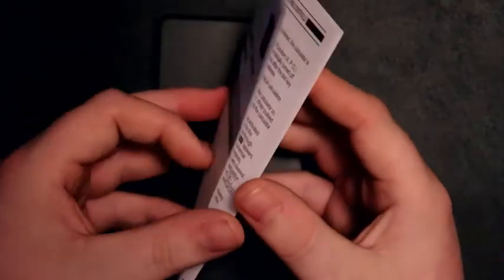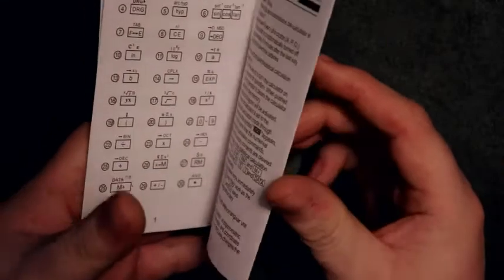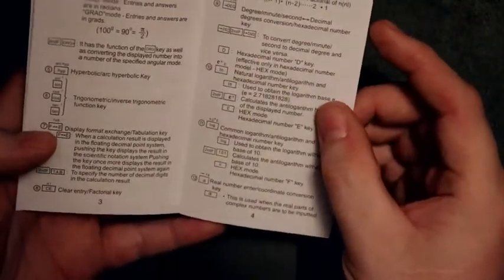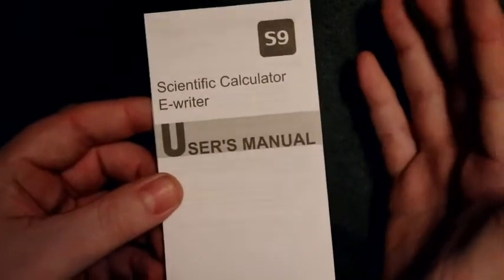First thing it comes with here is the user's manual, and this will come in very handy because some of the buttons are not exactly the same as what you would be used to on say one of the Casios or a TI calculator. I've already gone through this, given it a good once-over, and I think I kind of know what to do with it.